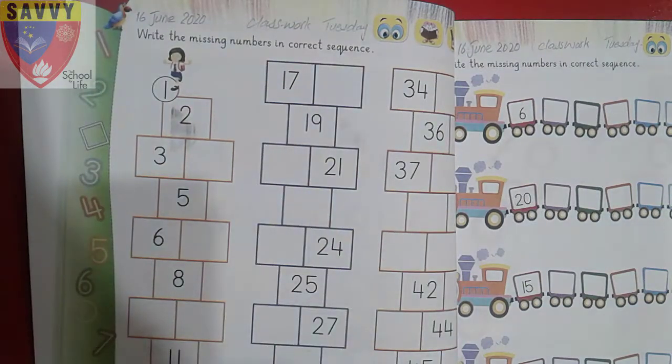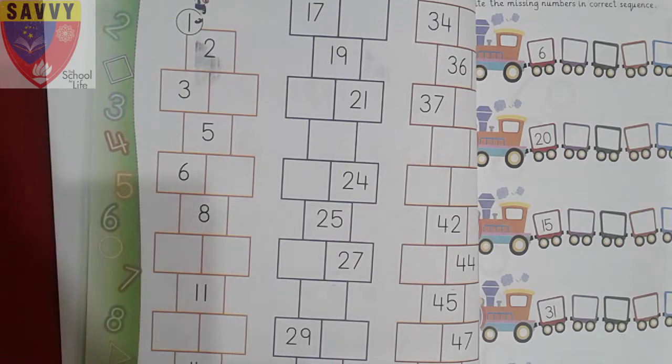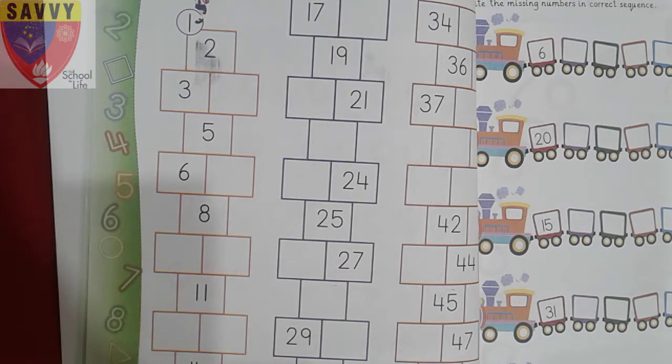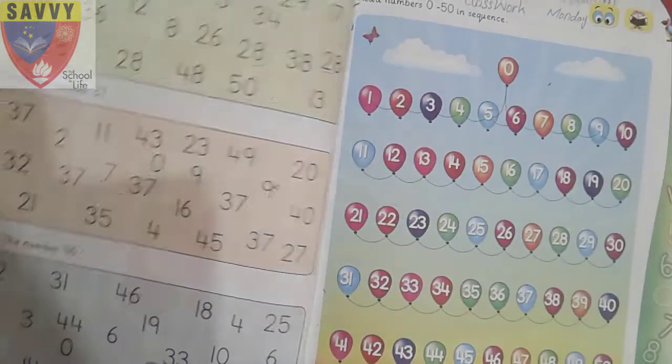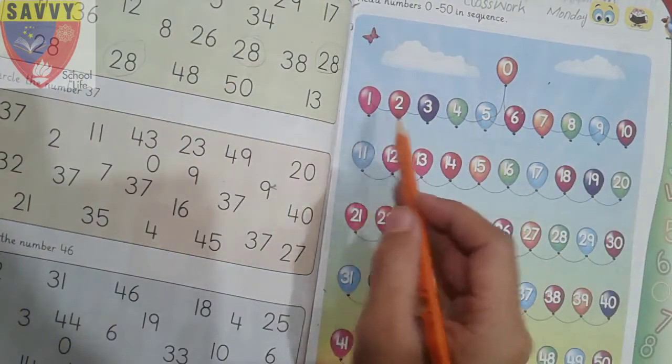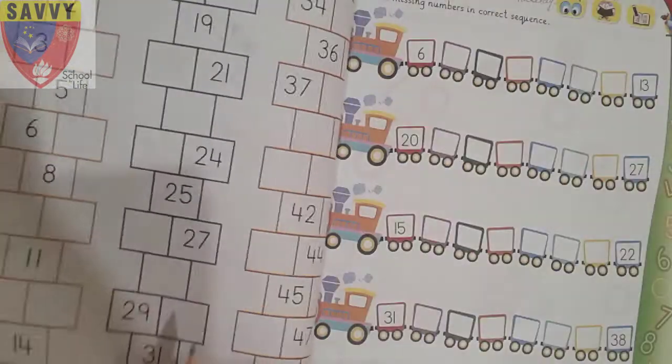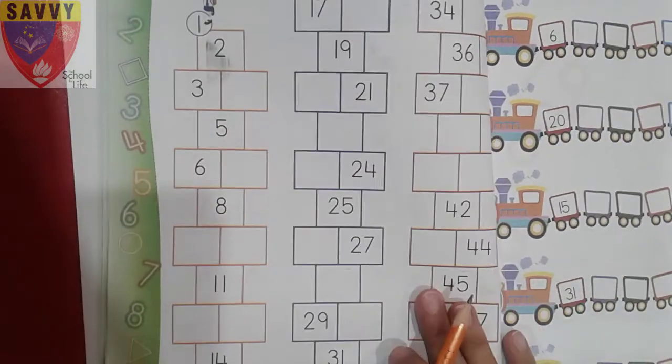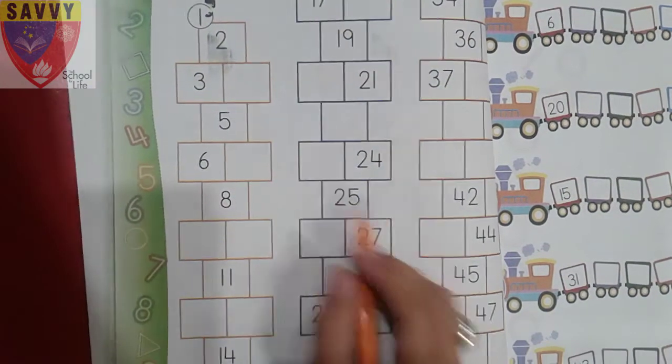Write class work date and day on page number 10. Write the missing numbers in correct sequence. Which numbers are missing? We need to see which number comes after which number, following the correct sequence according to forward counting, just like you learned on page number 9 - after zero comes one, after one comes two. Following this sequence, today you will write the missing numbers.